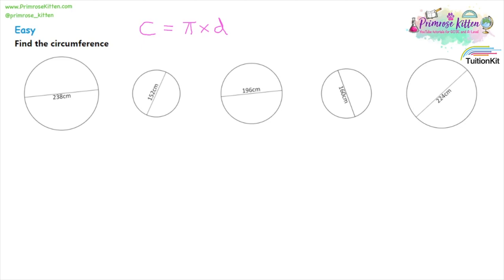Let's talk about the different parts of that formula in question one. I'm just gonna highlight the circumference of the circle in pink — it's a line that goes all the way around the outside of the circle. It's very similar to perimeter, but it's got a different name because it's curved.